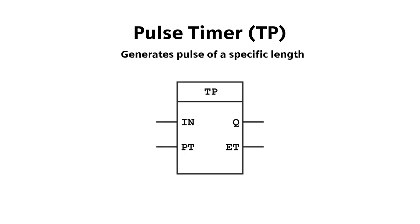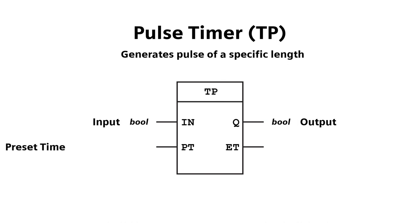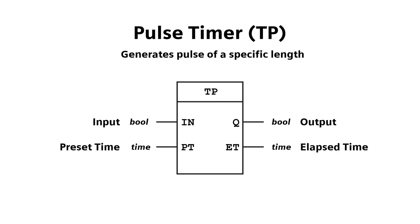The function block has four pins: one input, which takes a boolean data type; one output, which also takes a boolean data type; a preset time, which takes a time data type; and an elapsed time, which also takes a time data type.